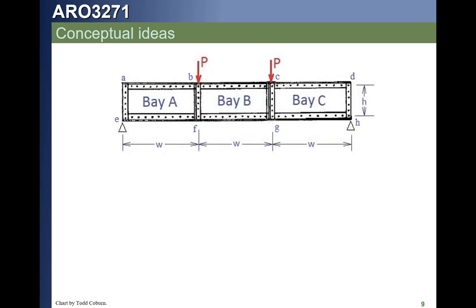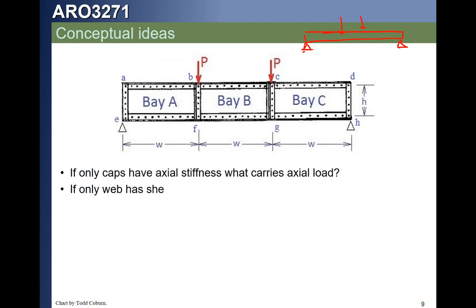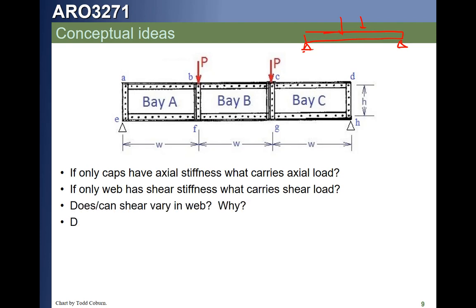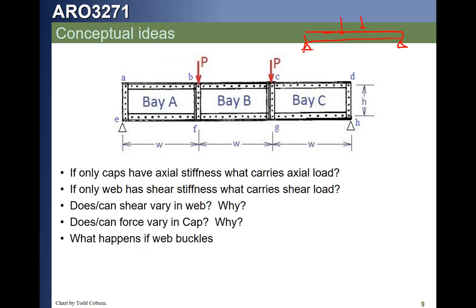We can extend this idea further by studying another simply supported beam with a pair of point loads. This beam has been expanded — it's a thin-webbed beam similar to what we'd see in a floor beam or something. We know already that if these webs are very thin, we can idealize this as a thin web with lumped cap areas.